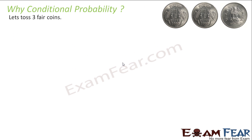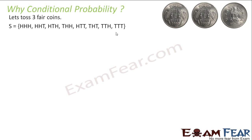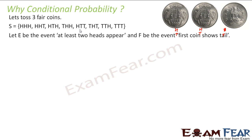Let's toss three coins. The sample space has 2 to the power 3 = 8 possible combinations: HHH, HHT, HTH, HTT, THH, THT, TTH, TTT. Let E be the event that at least two heads appear, and F be the event that the first coin shows tail. I have to find the probability of E given condition F — that is, at least two heads given the first coin is tail.